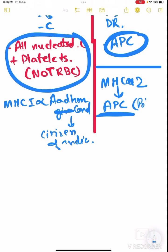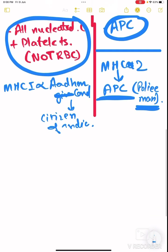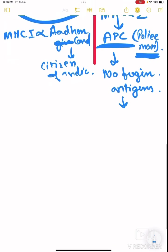Same way, APC is just like a policeman and they see that no foreign antigens should enter our body. And if foreign antigens are found to enter our body, they will be presented to the T cell just like a judge, and then they will be killed.